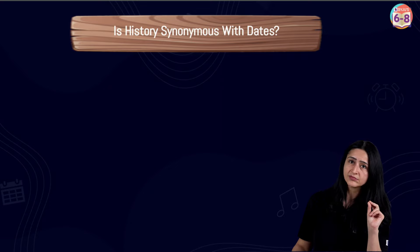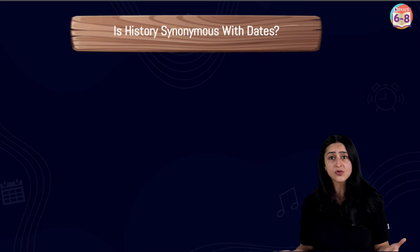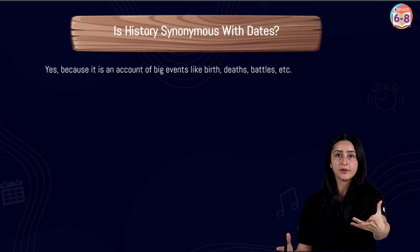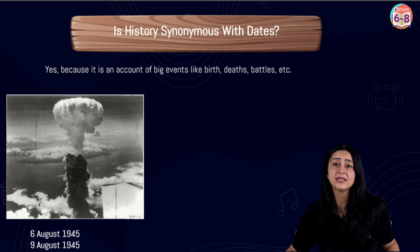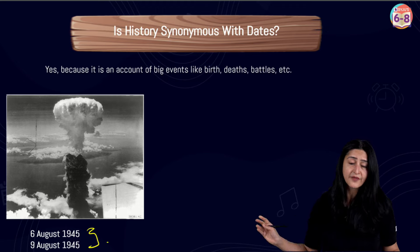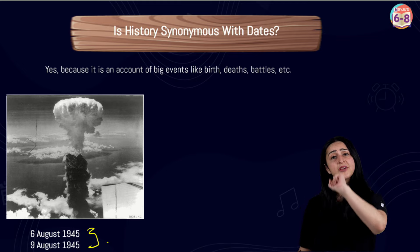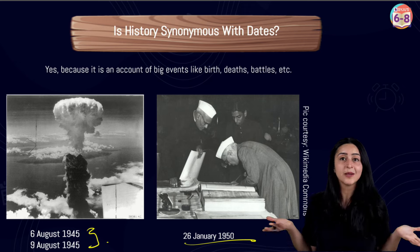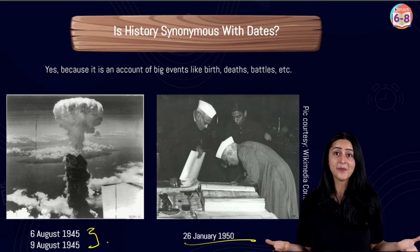Is history only about changes? How important are dates in history? Dates are very important, and many historians in the past believed so too, because history was always associated with big events like battles, for which we have precise dates. For example, atomic bombs were dropped on Hiroshima and Nagasaki on 6th August 1945 and 9th August 1945 respectively. Another important date is India becoming a republic on 26th January 1950. Whenever we talk about an important historical event, dates become really, really important.